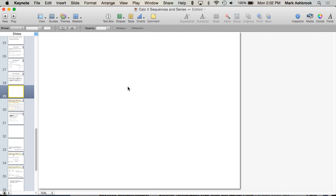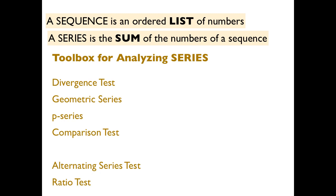Real basic things we should have solid by now. Here's some warm-up: get a partner. So far our toolbox includes the divergence test, the geometric series, the p-series, the comparison test, the alternating series test, and the ratio test. For each one, without looking at your notes, try to communicate as much as you can — the idea and the mathematics behind each one. Just talk it out.